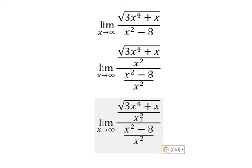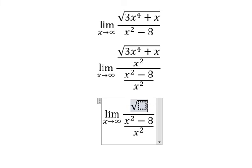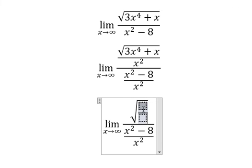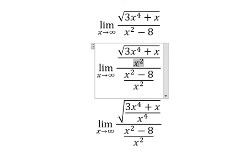If we put this inside the square root, it should look like this. Because the square root of x to the power of 4 gives us x squared.